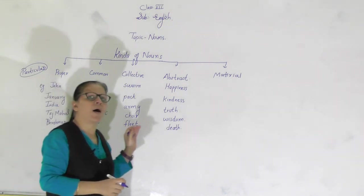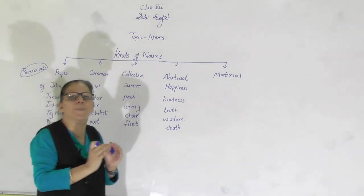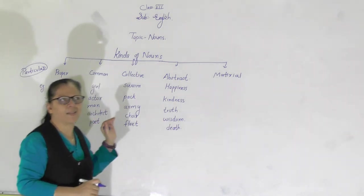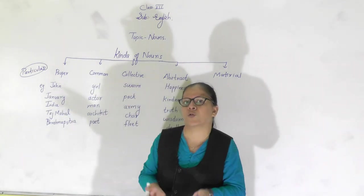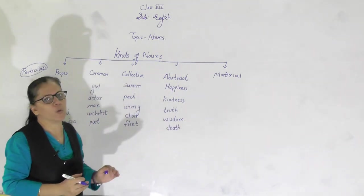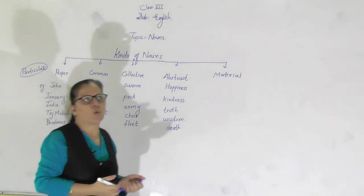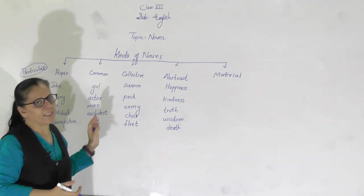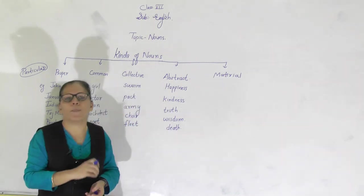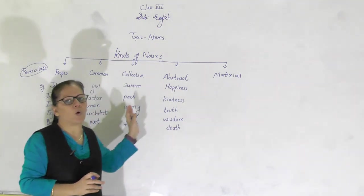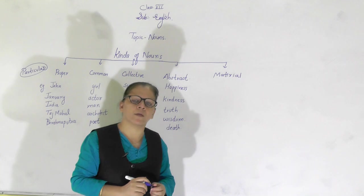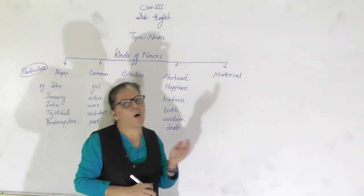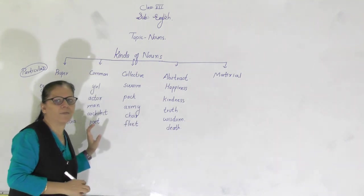India — there is no other place called India; it is the name of a specific country, hence it is a proper noun. Taj Mahal — no other monument can be called Taj Mahal, so it is a proper noun. It can also be the name of a river, like Brahmaputra. Remember, children: a proper noun always begins with a capital letter, whether it is used in the middle or at the end of a sentence.